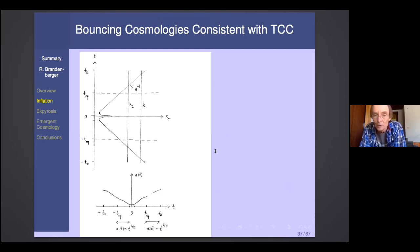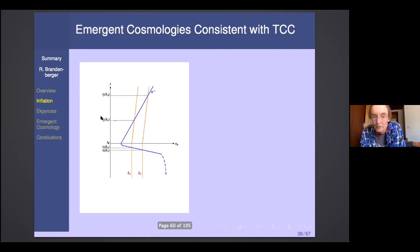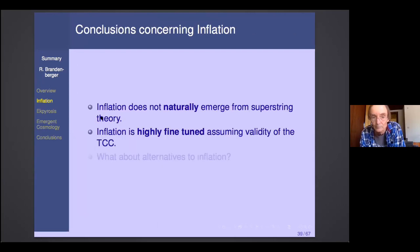So what about alternatives to inflation? Bouncing cosmologies are completely consistent with the TCC because fluctuations never approach the Planck length. Emergent cosmologies as well. So from the point of view of TCC, alternatives to inflation are on a more solid footing. So these are my conclusions concerning inflation.